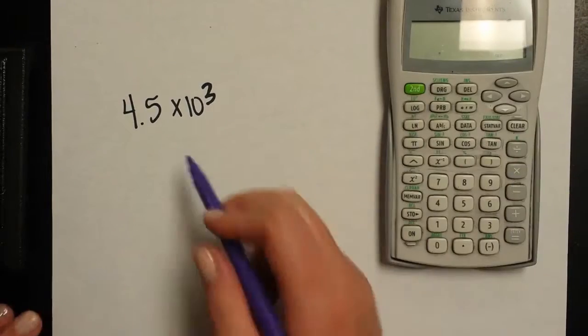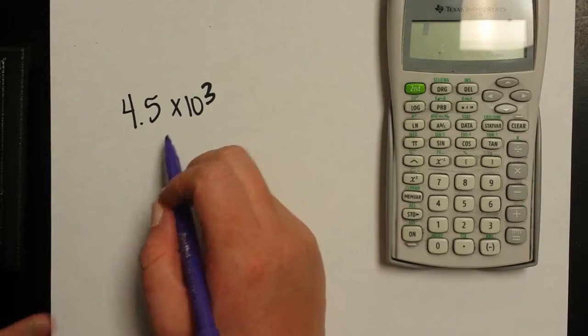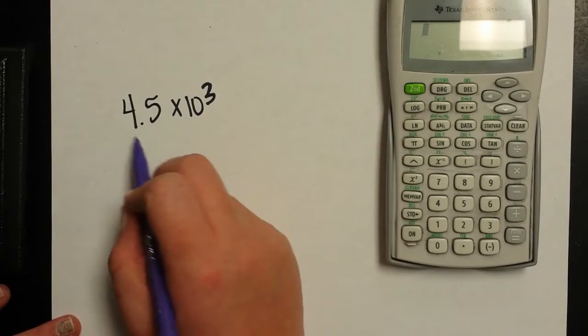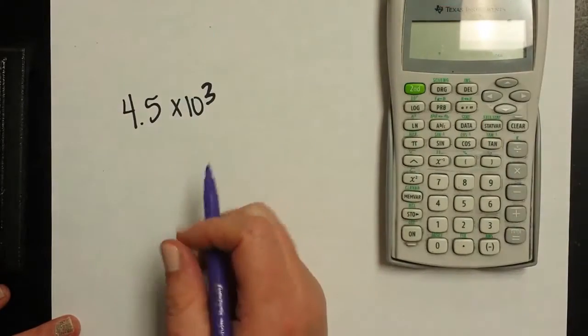But when you write a number in scientific notation, this is basically telling you what the math that you need to do to get the number that this is expressing.